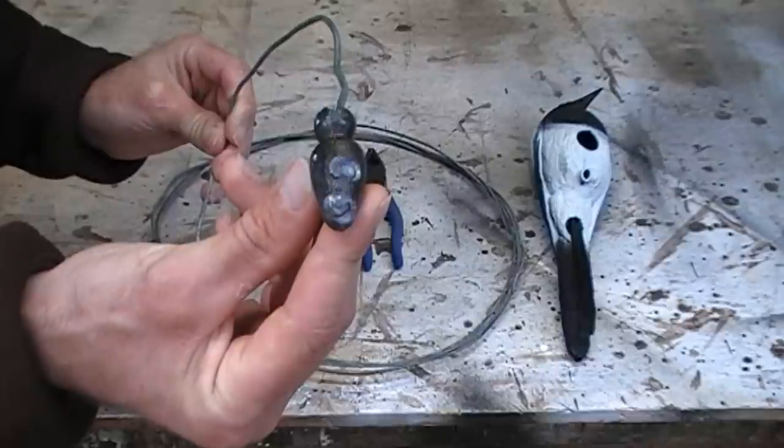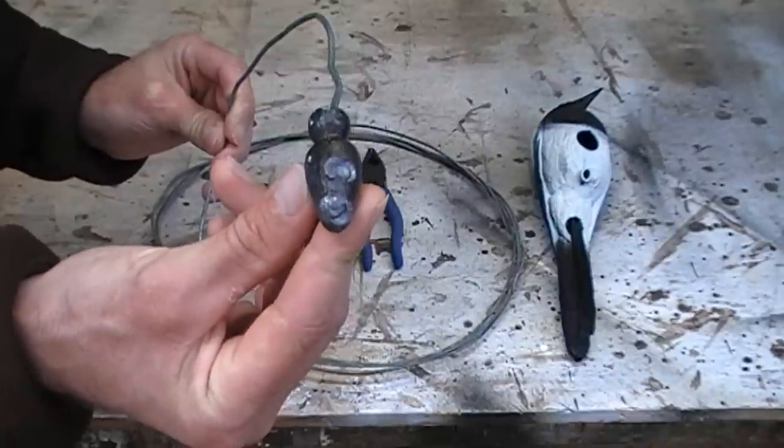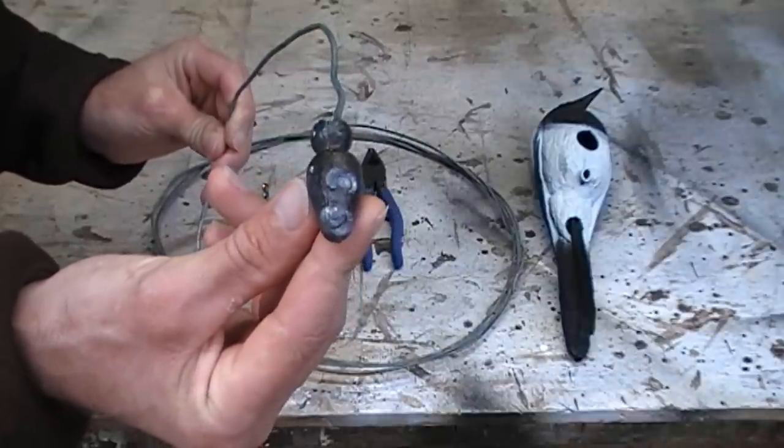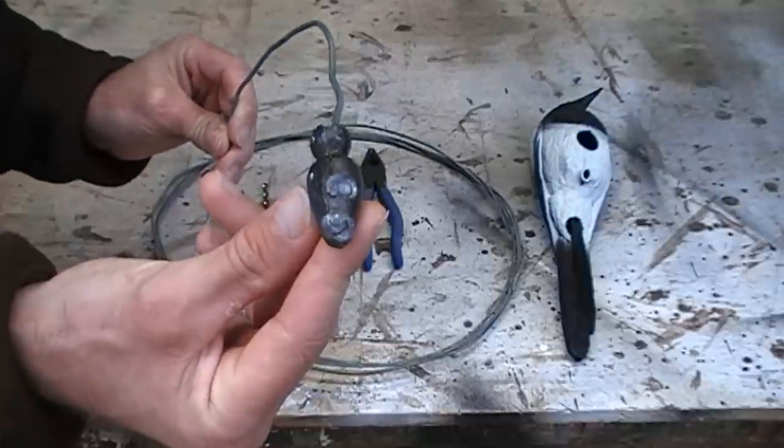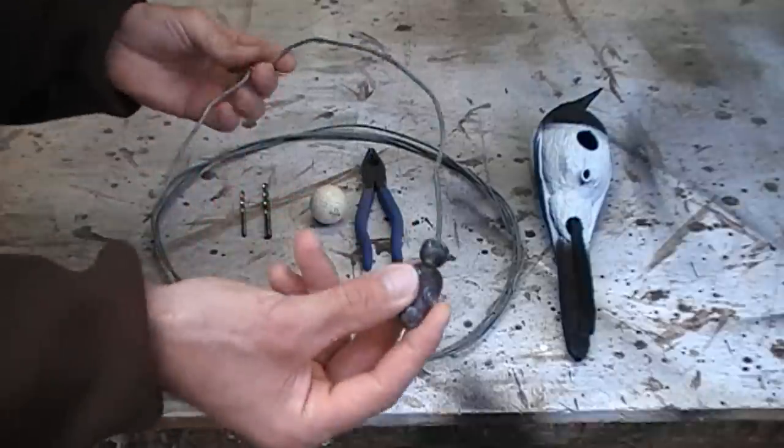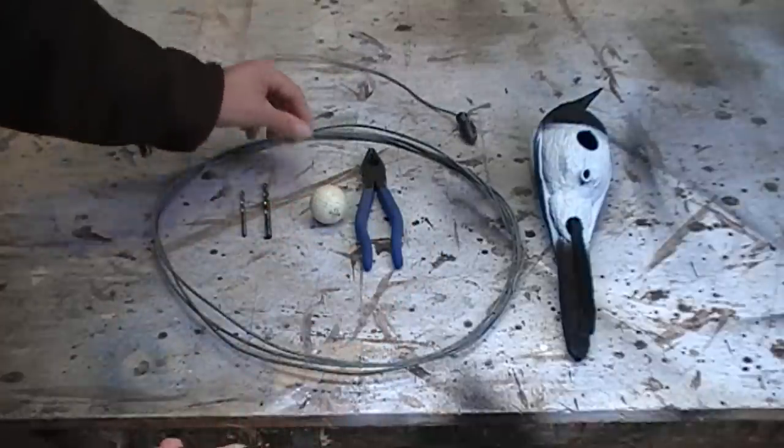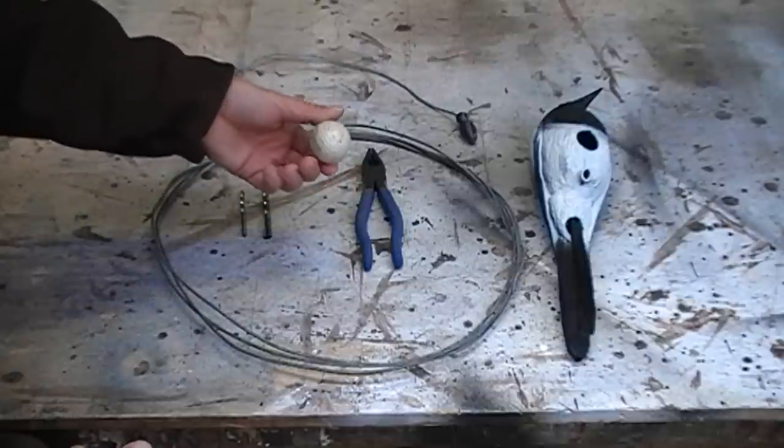But working with melted lead is very dangerous not only for the sheer heat involved to melt it but also because of the toxic fumes it gives off. So working with the golf ball is a much safer and easier way to go.